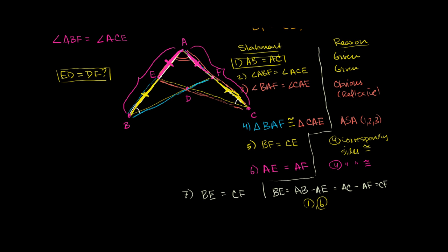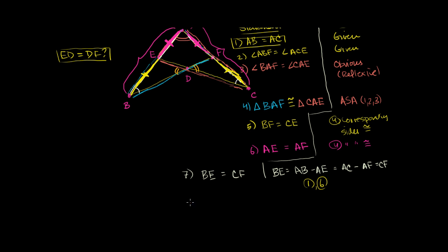The other thing we know, straight from vertical angles, is that angle EDB is congruent to angle FDC — vertical angles are congruent. Now all of a sudden we have something interesting again: orange angle, white angle, side on one triangle; orange angle, white angle, side on the other. So these two smaller triangles are congruent.